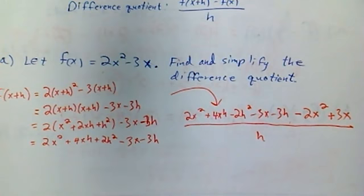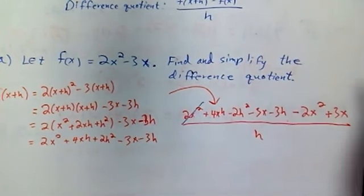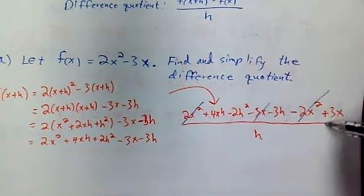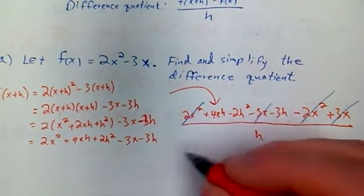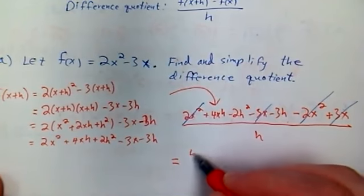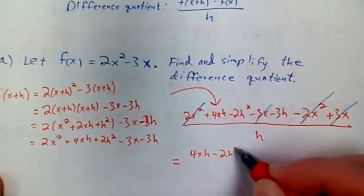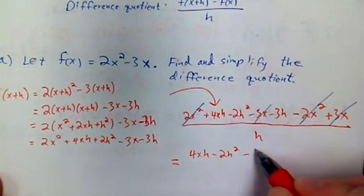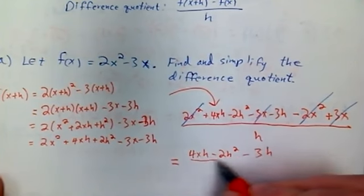And here's what I want you to notice. Positive 2x squared, negative 2x squared, negative 3x, positive 3x. So things are simplifying. That's going to leave me with 4xh plus 2h squared minus 3h all over h.